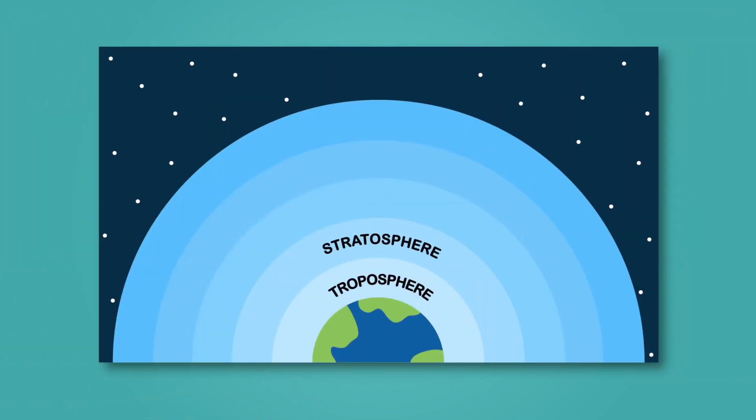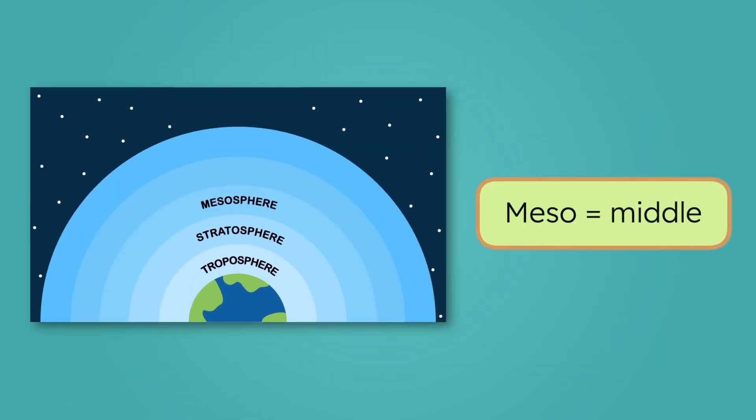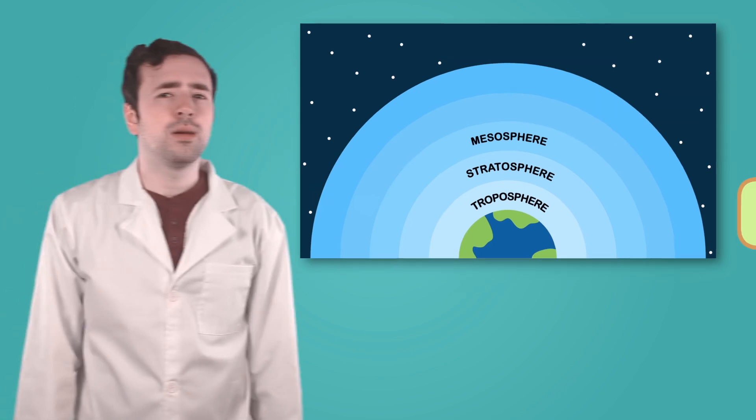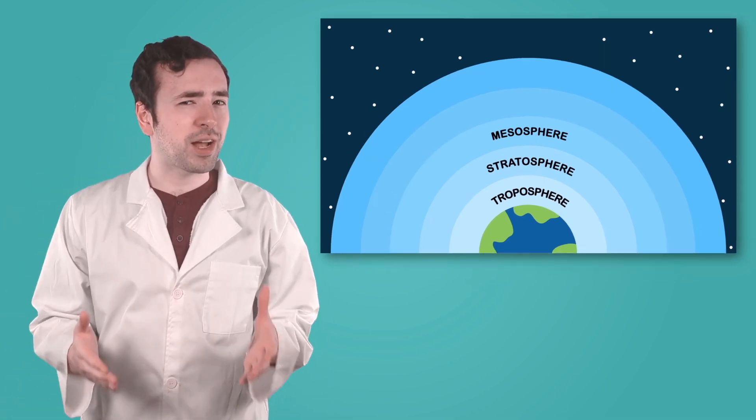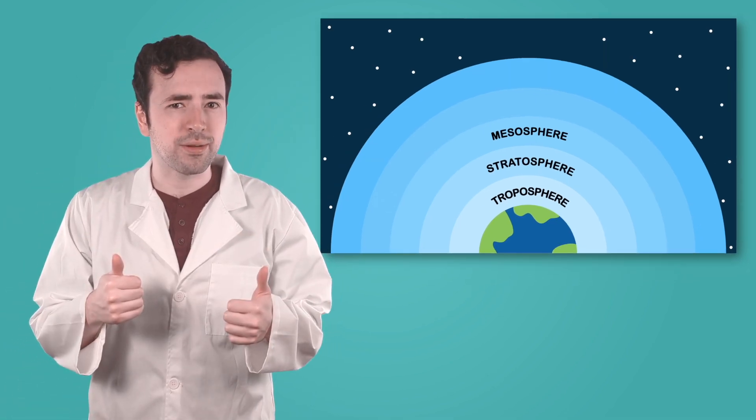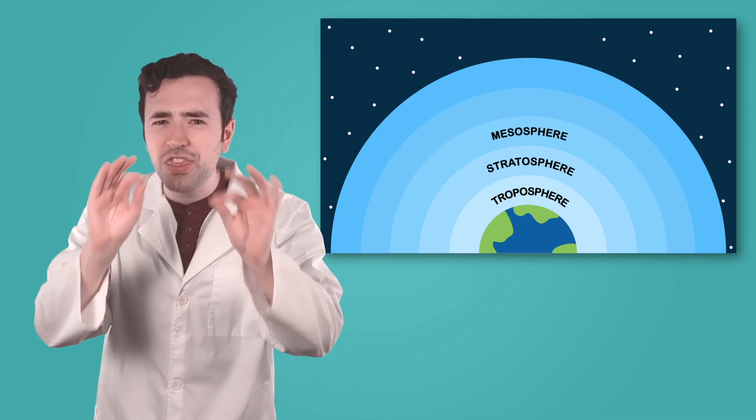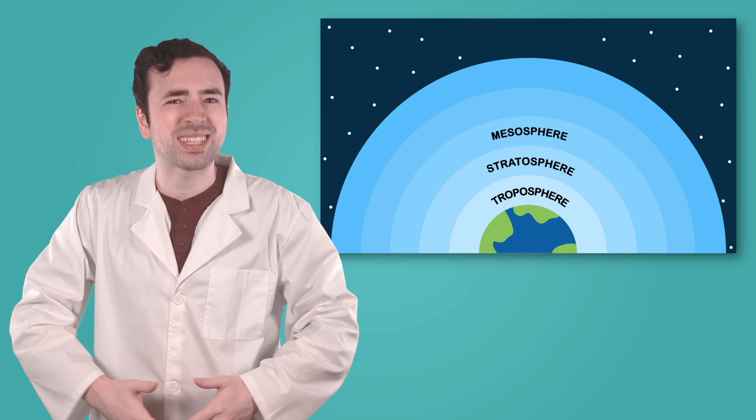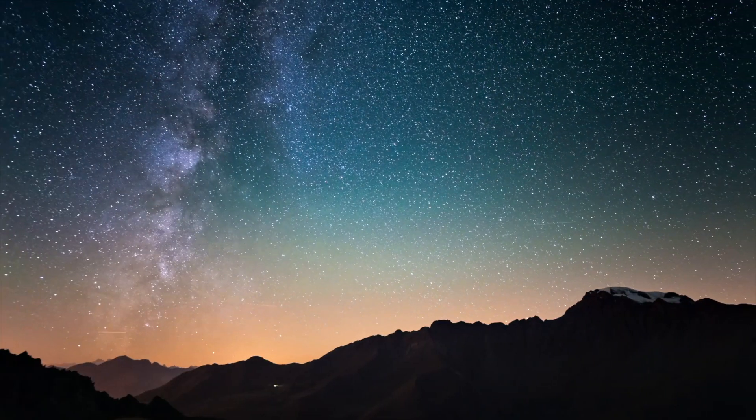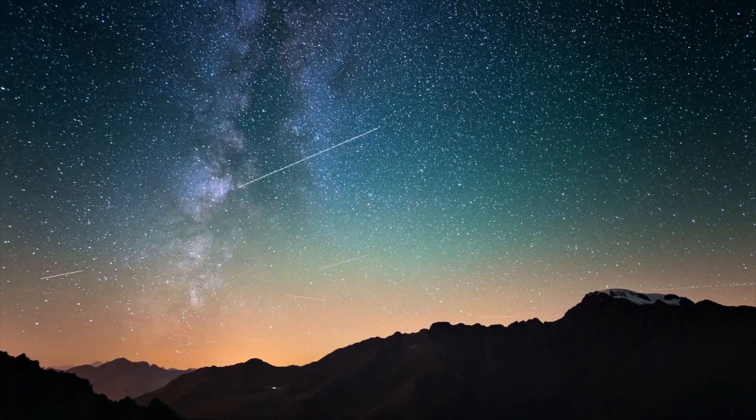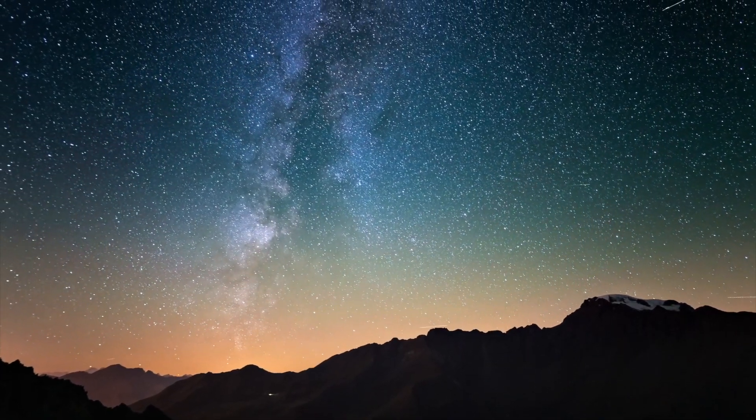Beyond the stratosphere is the mesosphere. Meso means middle, which makes sense because the mesosphere is right in the middle of the atmosphere's five layers. If the air was already thin in the stratosphere, what do you think happens as we go even higher? By the time we reach this layer the air is even thinner and the temperature drops to some of the coldest in the whole atmosphere. It would be impossible for us to survive here without special gear.